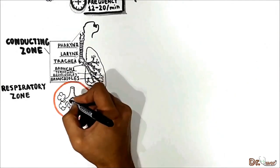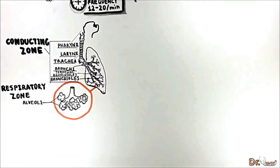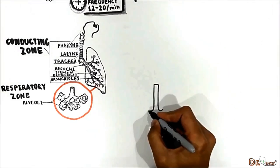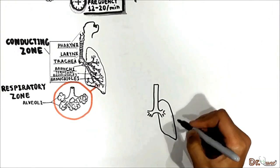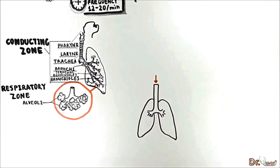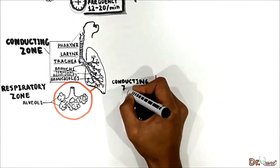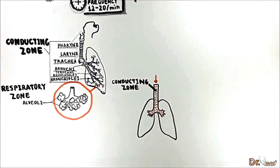The respiratory zone is composed of alveoli and is the site of oxygen and carbon dioxide exchange with the blood. When a person breathes in, some air never reaches the gas exchange areas — the alveoli — but simply fills the respiratory passages of the conducting zone, where gas exchange does not occur.